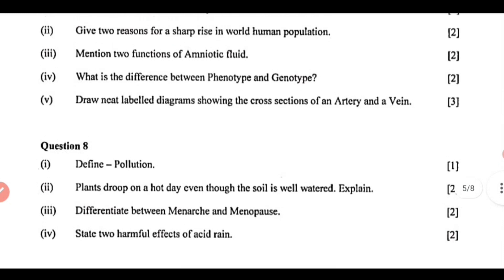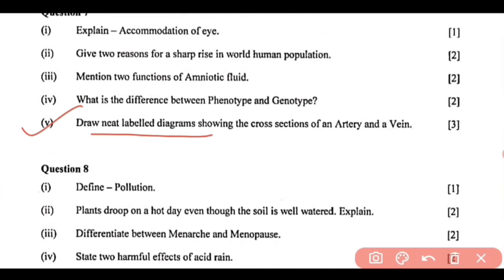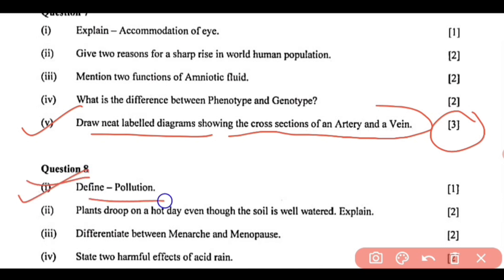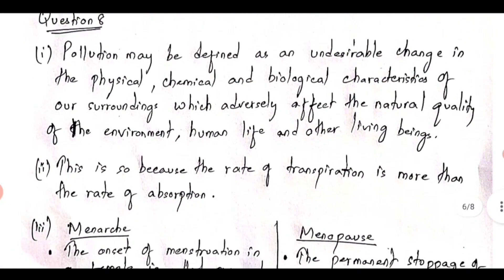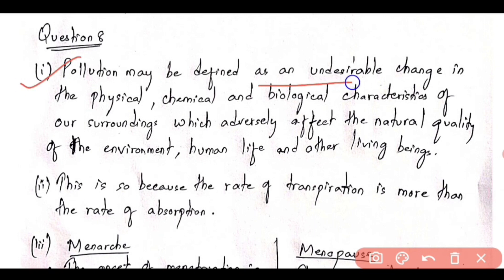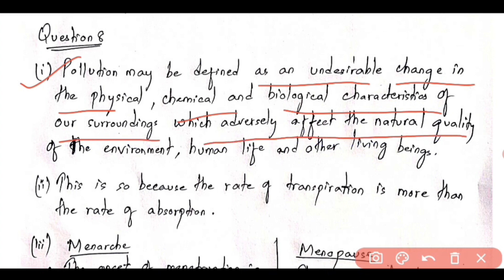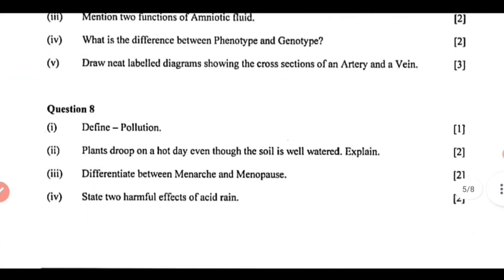Moving ahead to question number 8. There is one more question — question 5: draw neat labeled diagrams showing the cross-sections of an artery and a vein. You have to see the diagram in your book, label it properly, and draw it neatly — this is a 3-mark question. Next is question number 8, first: define pollution. Pollution may be defined as an undesirable change in the physical, chemical, and biological characteristics of our surroundings which adversely affects the natural quality of the environment, human life, and other living beings.